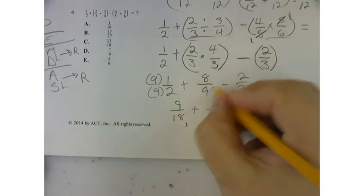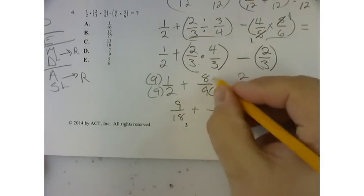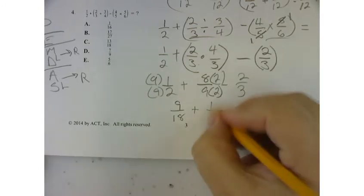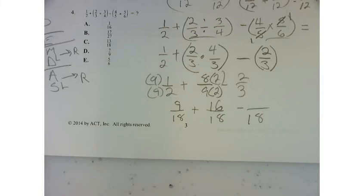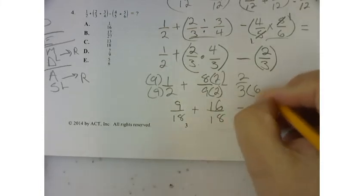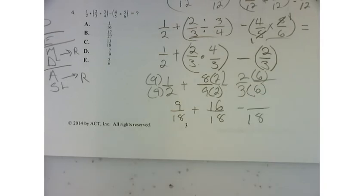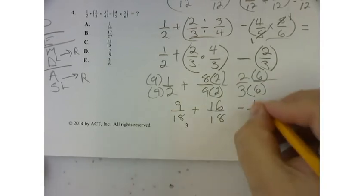This one, in order to get 18, I've got to multiply 9 by 2. Whatever I do on the bottom, I have to do to the top. So this becomes 16 over 18. And then lastly, I've got to multiply this by 6. And whatever I do on the bottom, I have to do to the top. So this becomes 12 over 18.